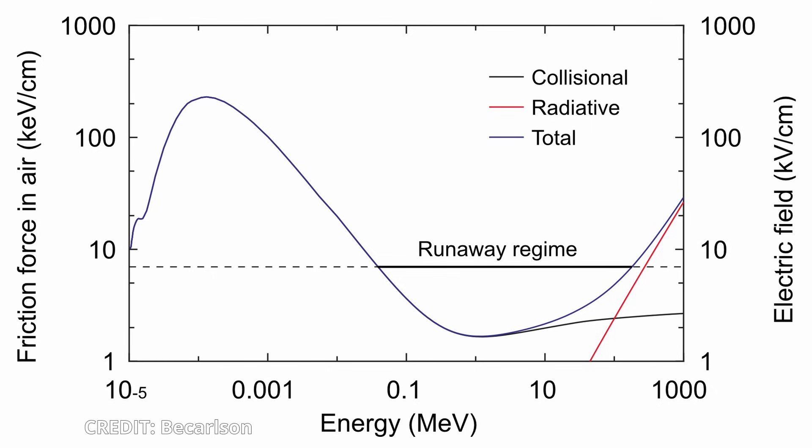Contrary to a common misconception, reaching the relativistic runaway electron avalanche threshold does not automatically guarantee electrical breakdown. To generate a significant number of runaway electrons, the electric field must exceed the threshold over multiple avalanche lengths, not just one.